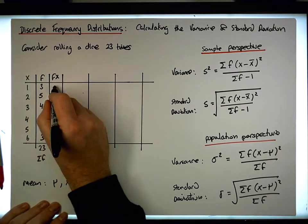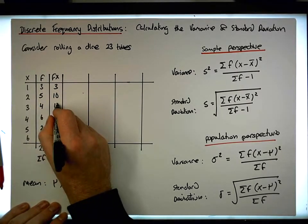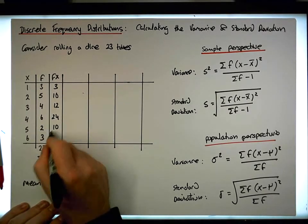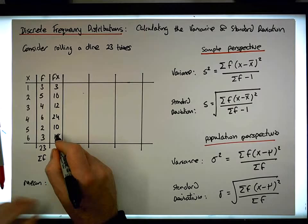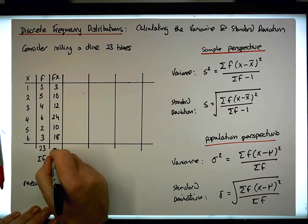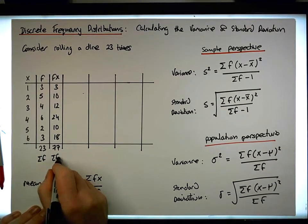So 3 times 1 gives me 3. 5 times 2 gives me 10. 4 times 3 gives me 12. 6 times 4 gives me 24. 2 times 5 gives me 10. 3 times 6 gives me 18. And if I sum these numbers up, I think we should get 77.